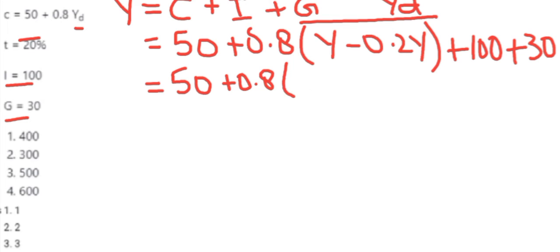Solving this: Y minus 0.2Y is 0.8Y, so we have 0.8 times 0.8Y plus 100 plus 30, which is 130.